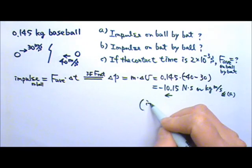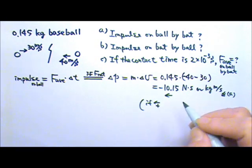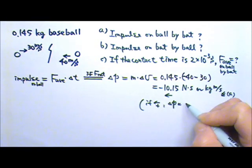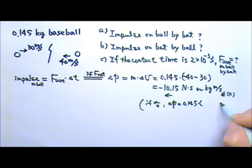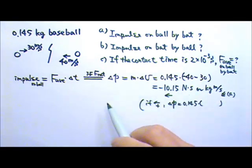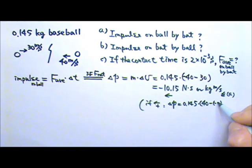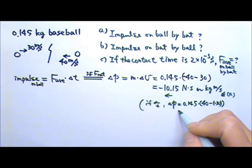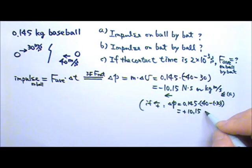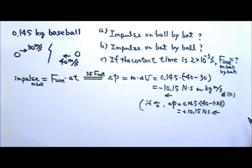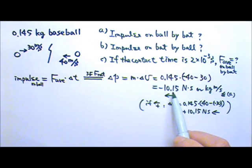Of course, if you had chosen to the left as positive, then delta P would be 0.145 times delta v, which would be positive 40 (final velocity) minus negative 30 (initial velocity), giving positive 10.15 newton-seconds. This positive would mean to the left. So choosing a different coordinate system gives the same result: 10.15 newton-seconds to the left.